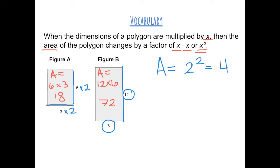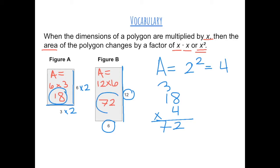Let's check: 18 times 4 gives us 72, which confirms the area of figure B. So the area increased by a factor of 4.